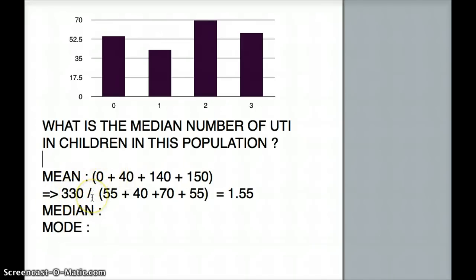And this is going to be divided by the number of population that's in this graph. So how can I find that? It's right from the graph here, the y-axis. So 55 plus 40 plus 70 plus 55, and this is my mean. Simple.